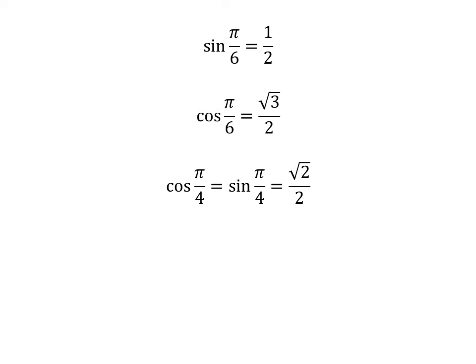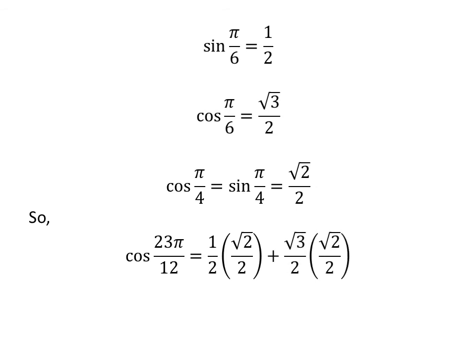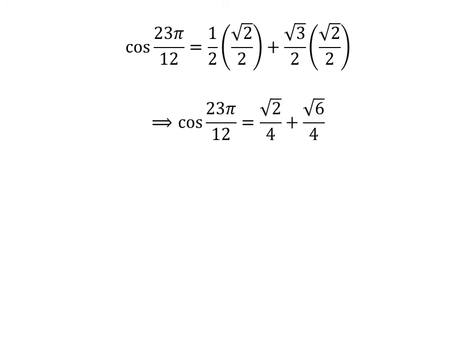As we know, sine of pi upon 6 is equal to 1 upon 2, cosine of pi upon 6 is equal to square root of 3 upon 2, and cosine of pi upon 4 is equal to sine of pi upon 4 is equal to square root of 2 upon 2. So we plug in these values in the above equation. We get cosine of 23 times pi upon 12 is equal to half times square root of 2 upon 2 plus square root of 3 upon 2 times square root of 2 upon 2. Straight multiplication gives us cosine of 23 times pi upon 12 is equal to square root of 2 upon 4 plus square root of 6 upon 4.